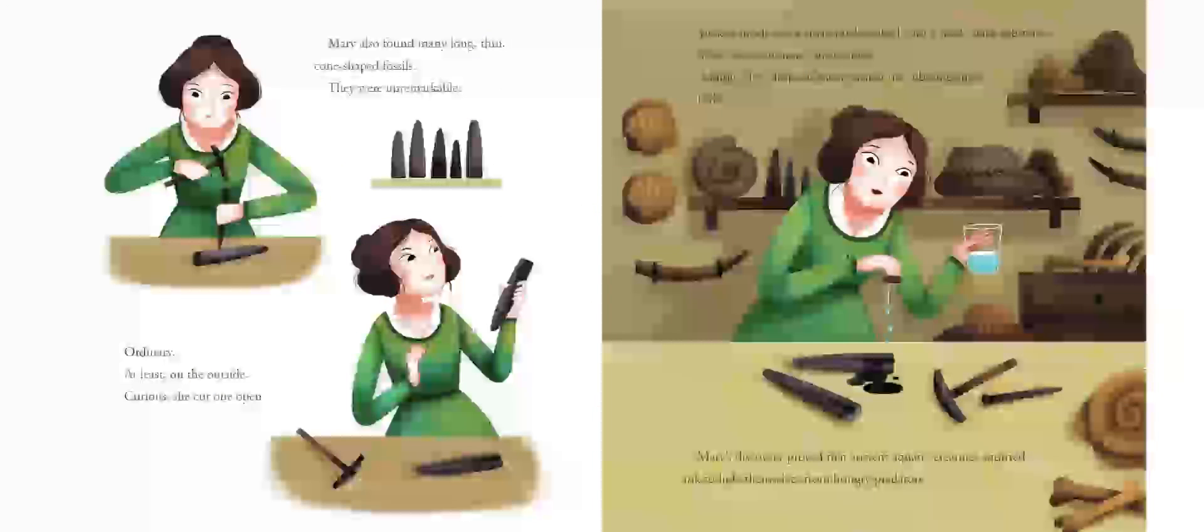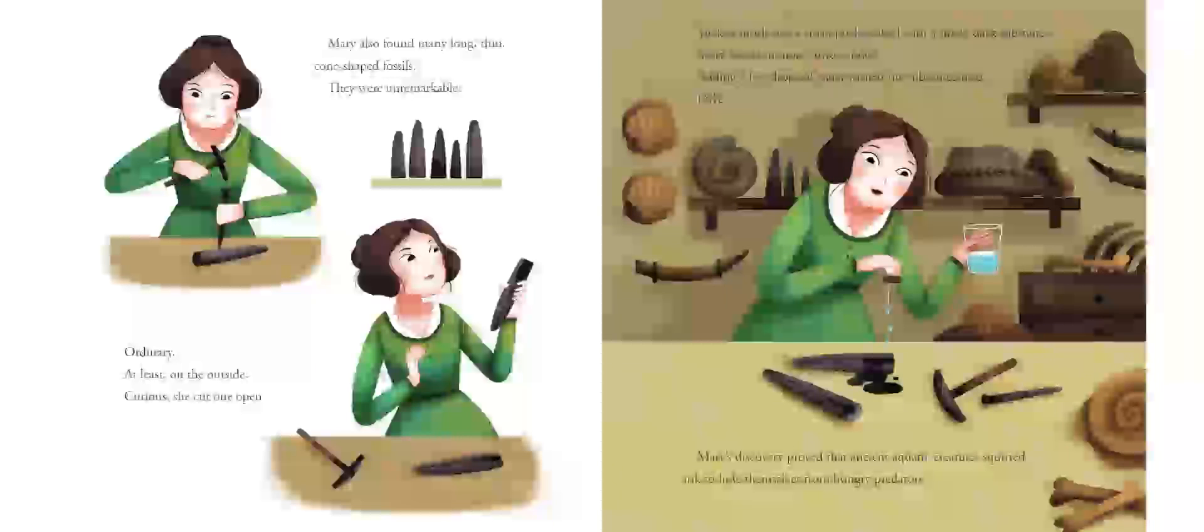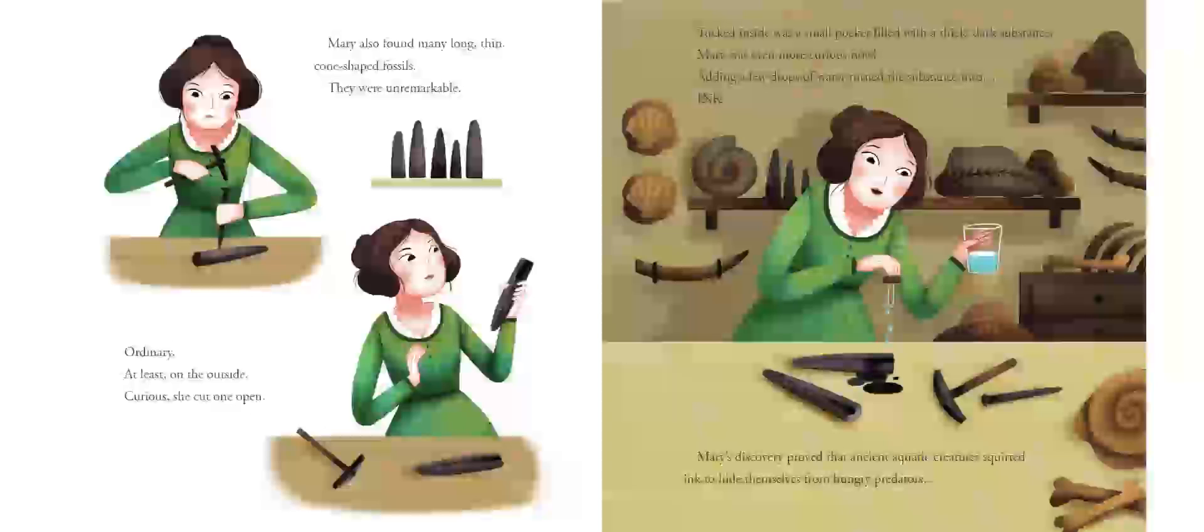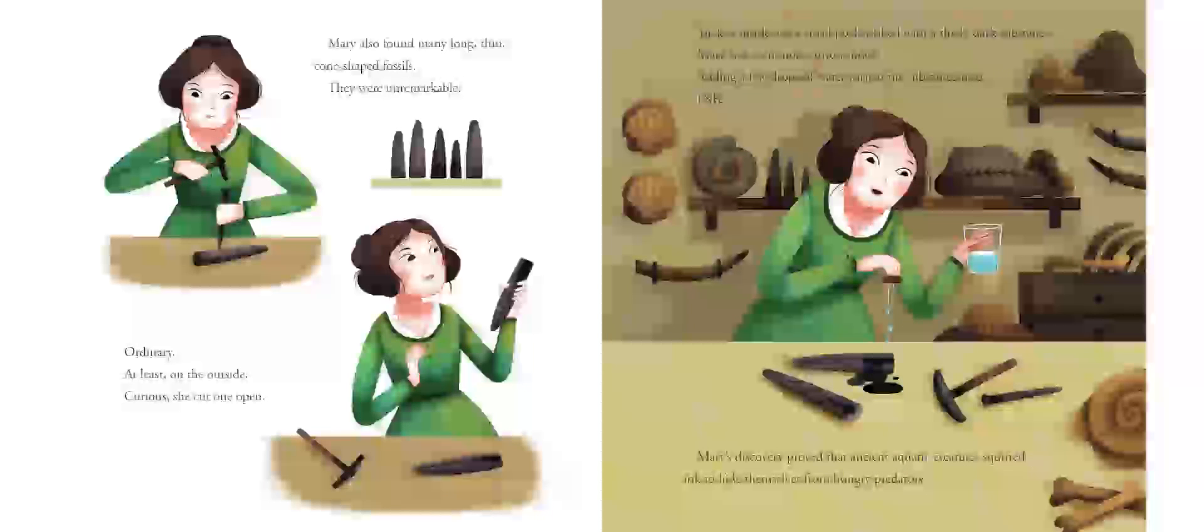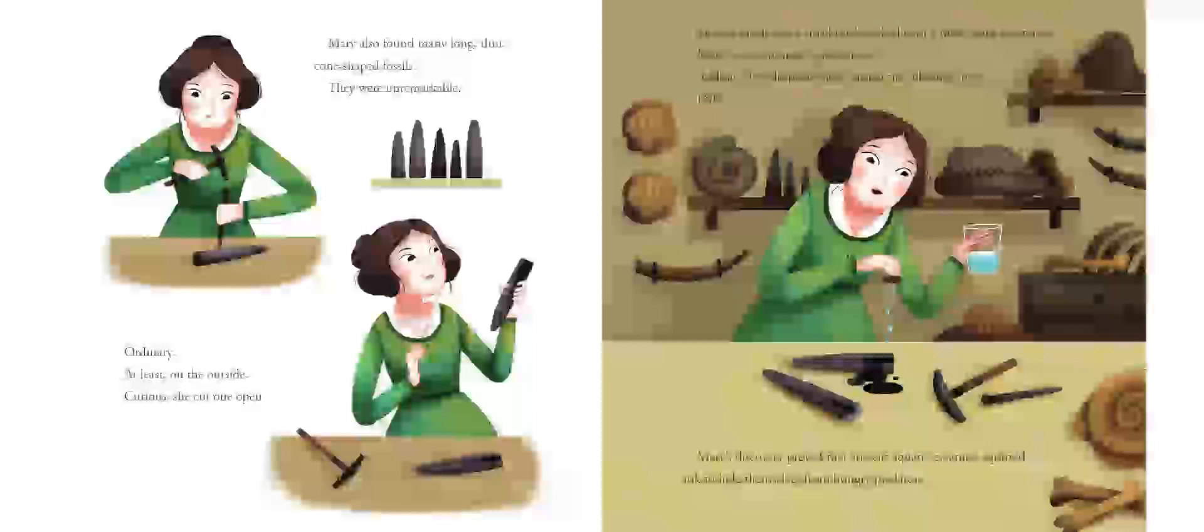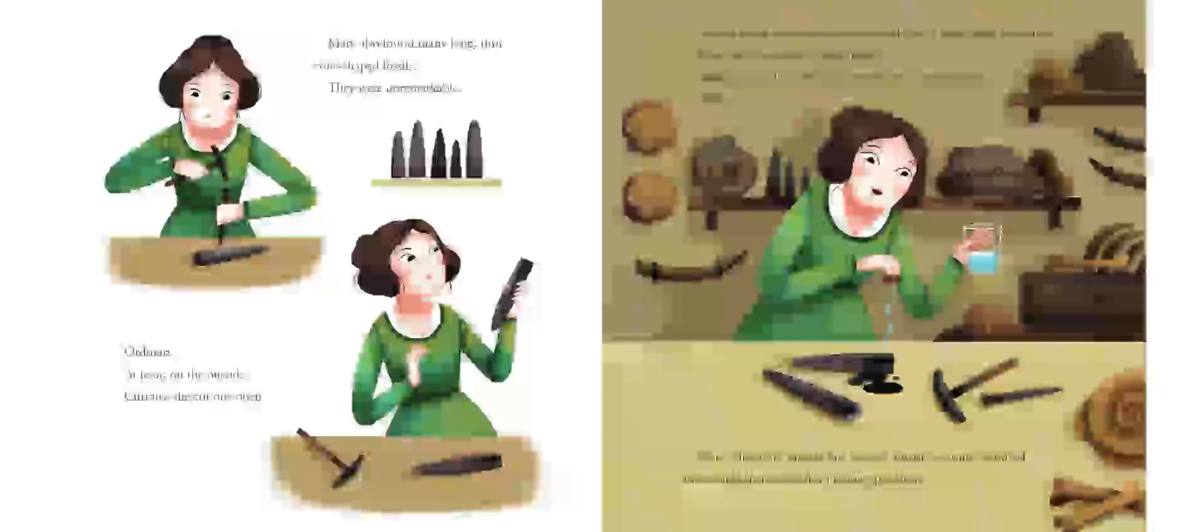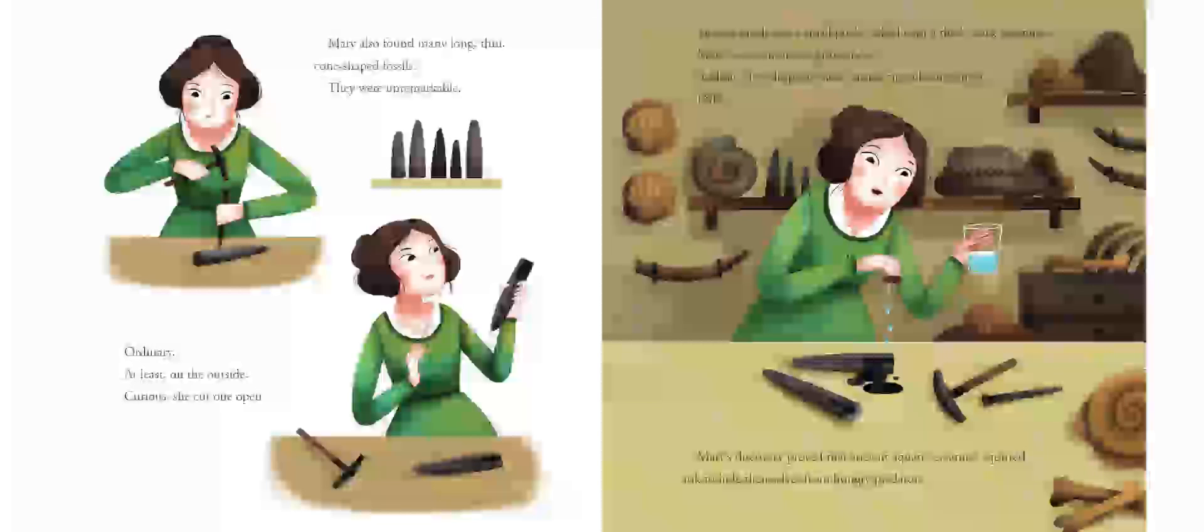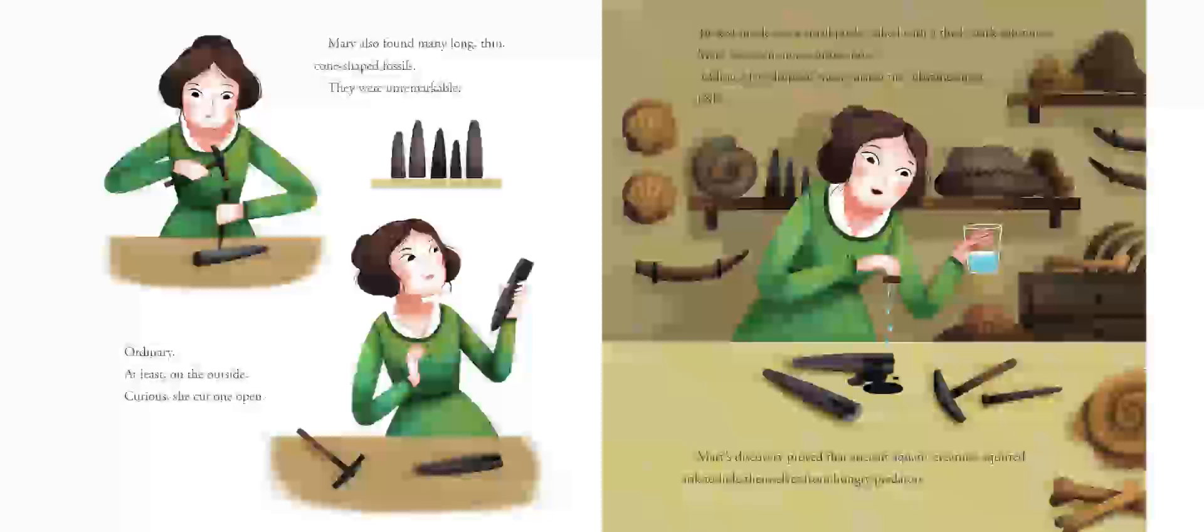Mary's discovery helped scholars learn more about what ancient creatures ate. Mary also found many long, thin, cone-shaped fossils. They were unremarkable. Ordinary, at least on the outside. Curious, she cut one open. Tucked inside was a small pocket filled with a thick, dark substance. Mary was even more curious now. Adding a few drops of water turned the substance into ink. Mary's discovery proved that ancient aquatic creatures squirted ink to hide themselves from hungry predators.